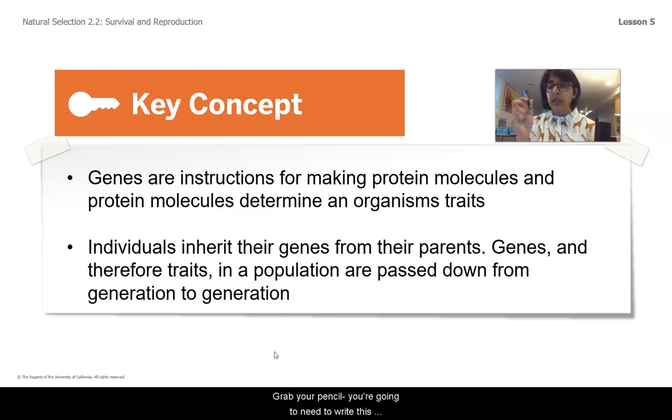Grab your pencil. You're gonna need to write this down. You can write it down in a tracker if you're using one of those. I'm just using a little notebook. You can put it down in your notebook. It's gonna be essential that you write this down to help further our understanding. Okay, so the first key concept: Genes are instructions for making protein molecules and protein molecules determine an organism's traits.